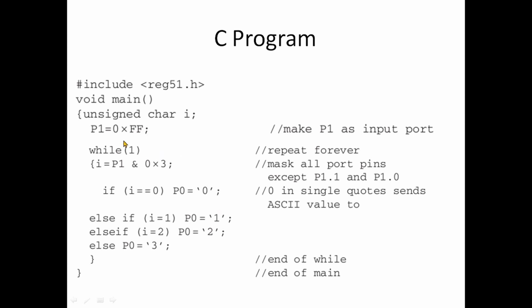Let's write to P0. This is void main — unsigned character i, P1 = 0xFF. If we read P1, set it to 0xFF, then i is equal to P1. The two bits are compared: same bits in the two-bit value give 0.